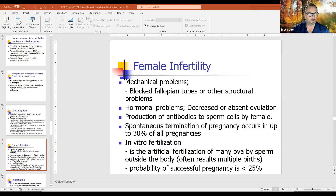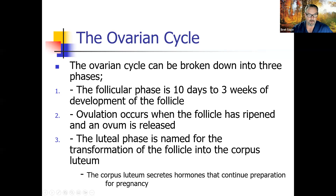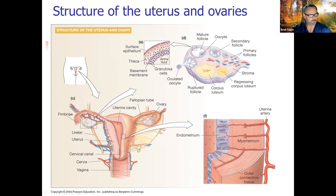The corpus luteum secretes hormones that continue preparation for pregnancy until the placenta takes over. Primary follicles become secondary follicles, then a mature follicle ruptures releasing the oocyte. That ruptured follicle becomes the corpus luteum, which guides potential pregnancy. If fertilization is successful, the corpus luteum regresses after the placenta takes over and starts producing the hormones.